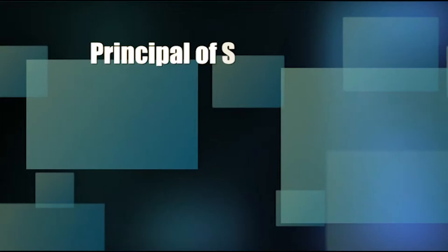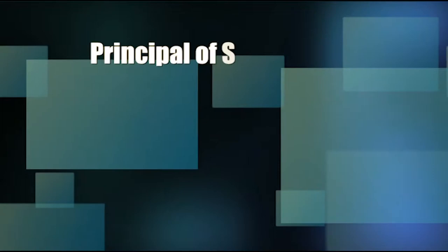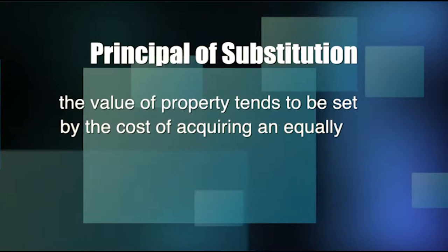The principle of substitution states that the value of property tends to be set by the cost of acquiring an equally desirable substitute property. In other words, a buyer is unlikely to pay more for a property than it would cost to purchase a similar one. Although every piece of real estate is unique, if two similar-sized buildings are on the same block and one sells for half a million, what would you pay for the building next door?